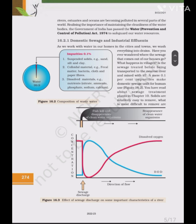Domestic Sewage and Industrial Effluents: As we work with water in our homes, cities and towns, we wash everything into drains. A mere 0.1% impurities make domestic sewage unfit for human use (Figure 16.2). Among the impurities, we have suspended particles — e.g., sand, silt and clay; colloidal material — e.g., fecal matter, bacteria, cloth and paper fibers; and dissolved materials — e.g., nutrients like nitrate, ammonia, phosphate, sodium and calcium.